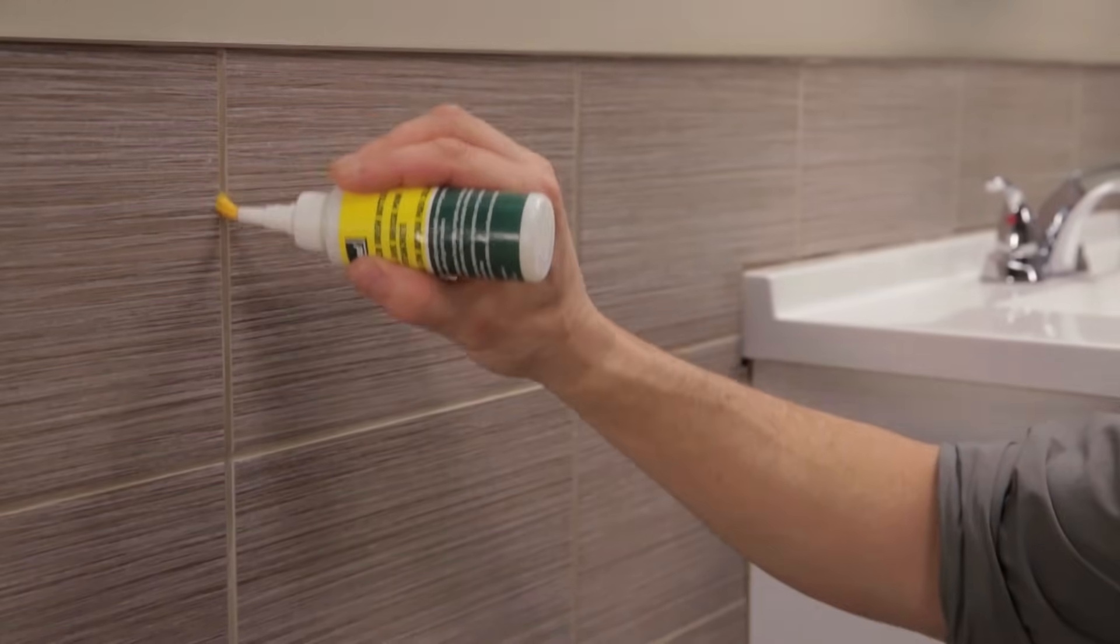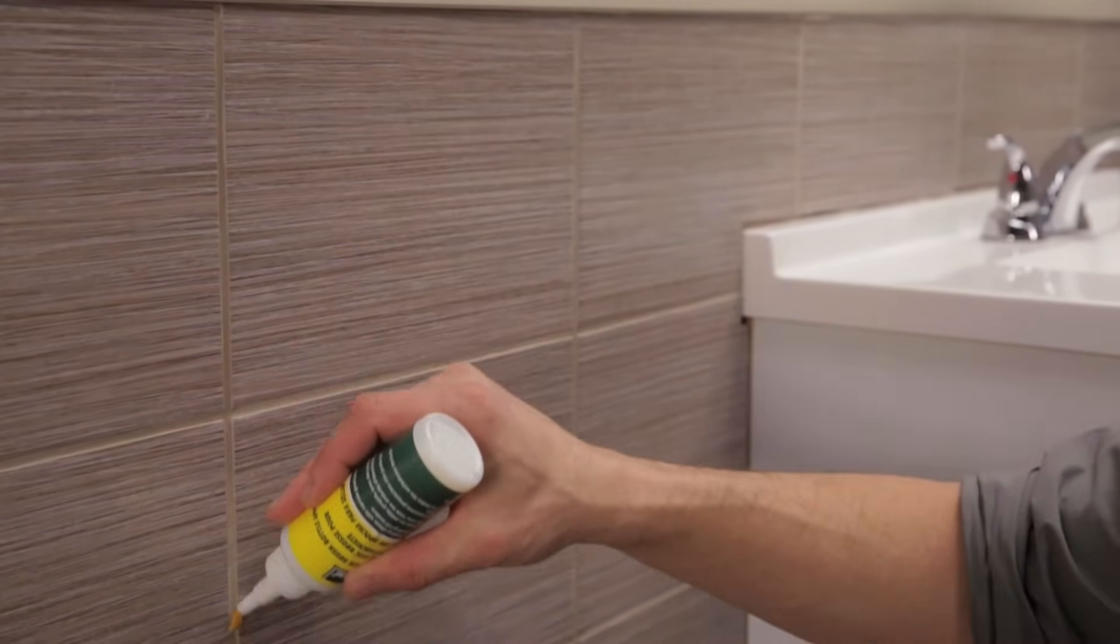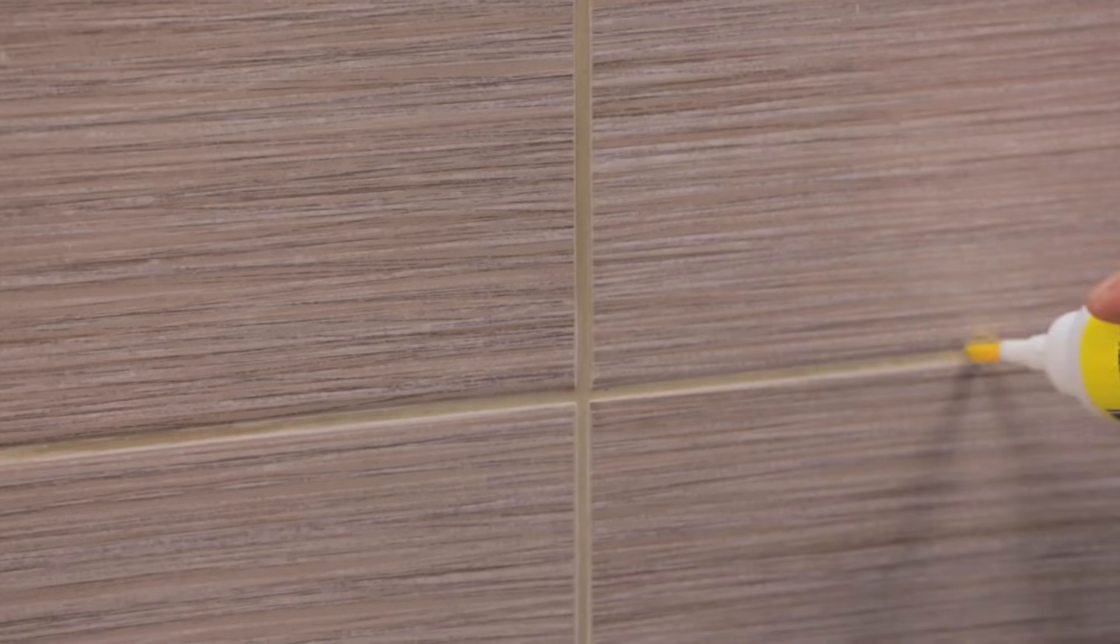After 24 hours, when the grout is completely dry, apply grout sealer to the joints. Wait 30 minutes, then apply a second layer.